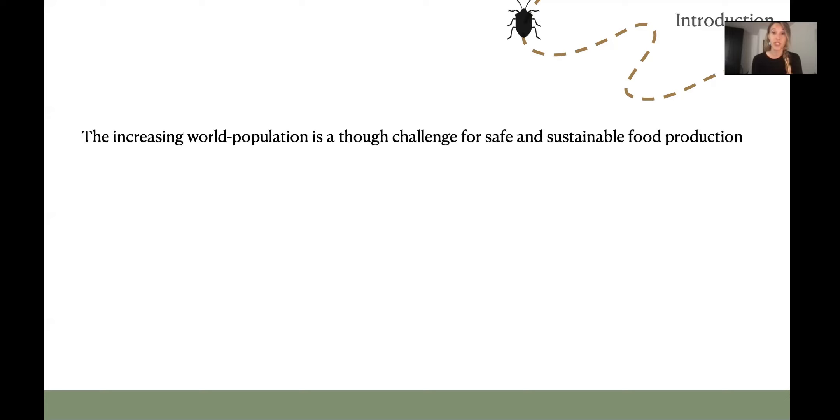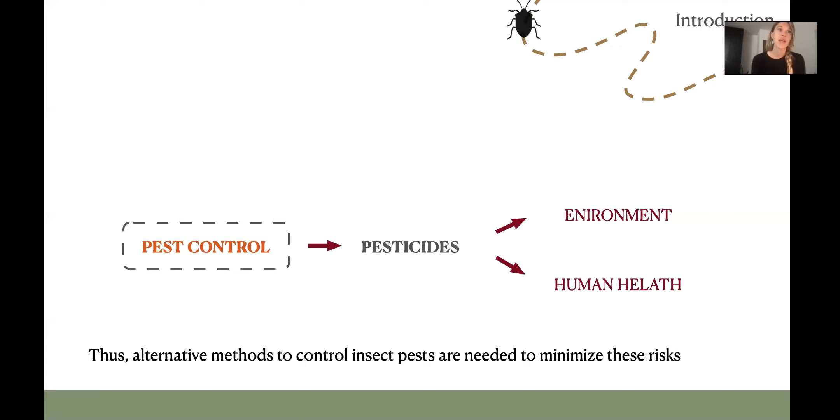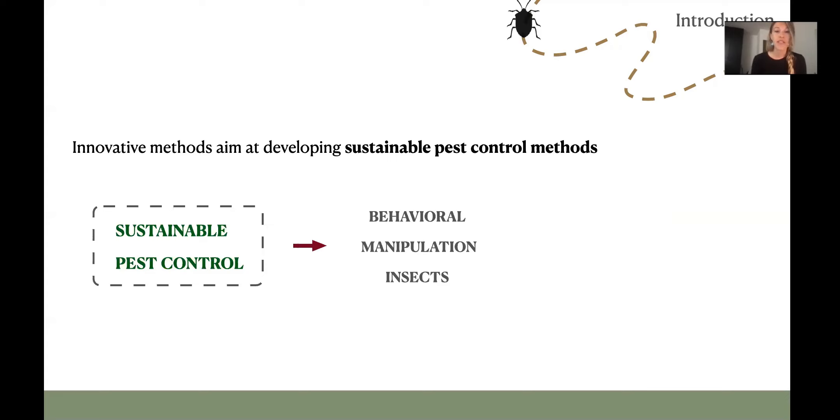The increasing world population is a tough challenge for safe and sustainable food production. One issue in particular concern is the demand for reduction of external inputs required for pest control, which currently mainly relies on pesticides, which threaten the environment and human health.